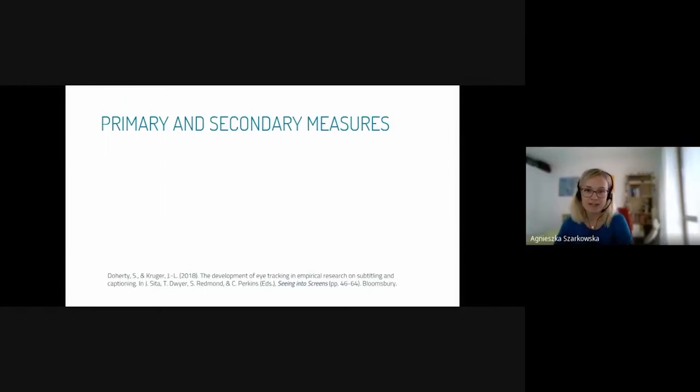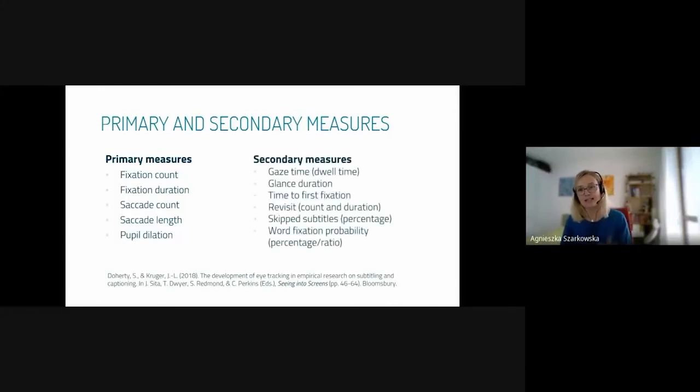Talking about eye tracking measures, Stephen Doherty and Jan-Louis Kruger made a very useful distinction between primary eye tracking measures—raw values which you don't have to calculate—and secondary measures which need to be considered as relative to some primary measures. They're calculated against some sort of baseline. What's really important is how we define and understand these measures, particularly secondary measures where we do some calculations.